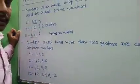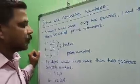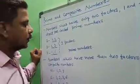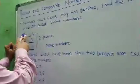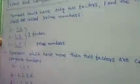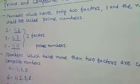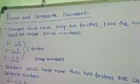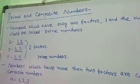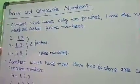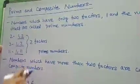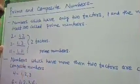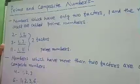Here I have written two factors. So two, three, eleven, seventeen, thirteen, etc. are called prime numbers.